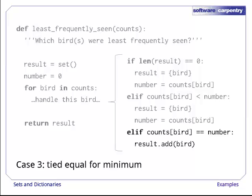Finally, if the count for this bird is the same as the current lowest score, we add this bird's name to the set of birds with that score. There isn't a branch of the if to handle the case where the count for the current bird is greater than the current minimum, since there's nothing for us to do in that case.